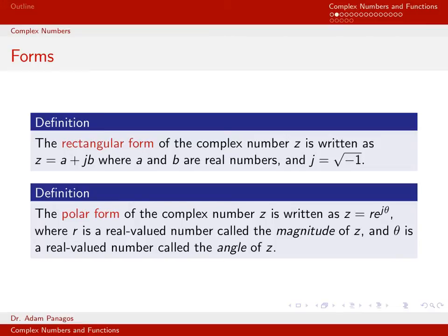The definition of a complex number that I just provided chose to write the complex number z in what's called the rectangular form. The rectangular form of a complex number is just equal to a plus jb.